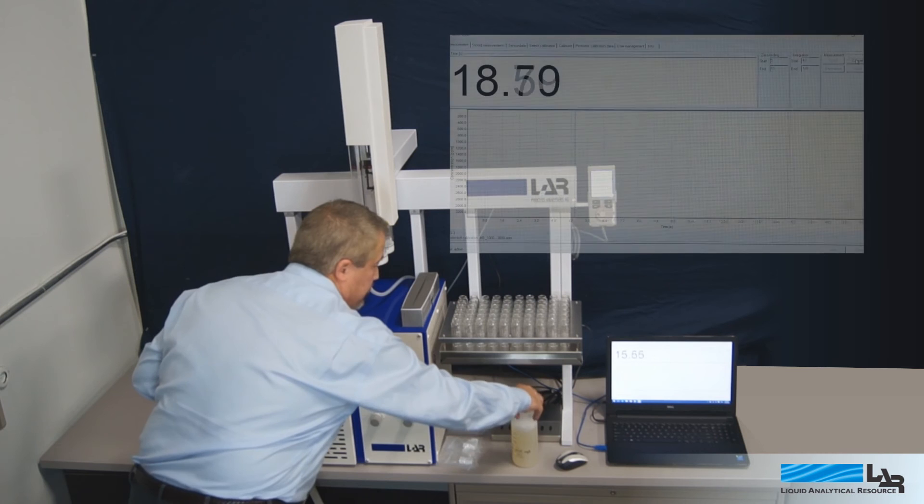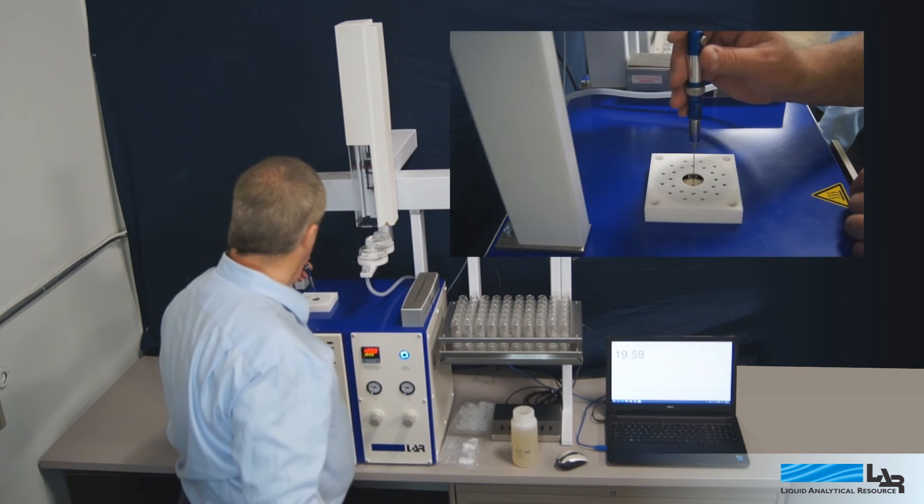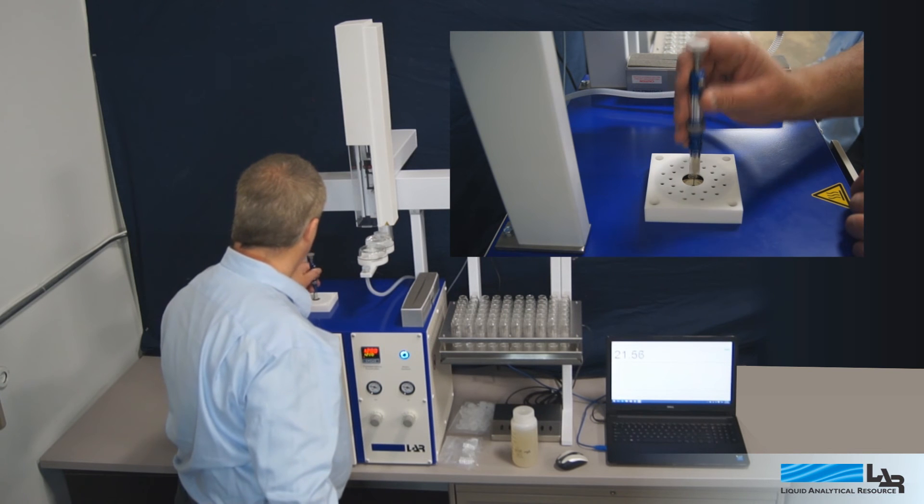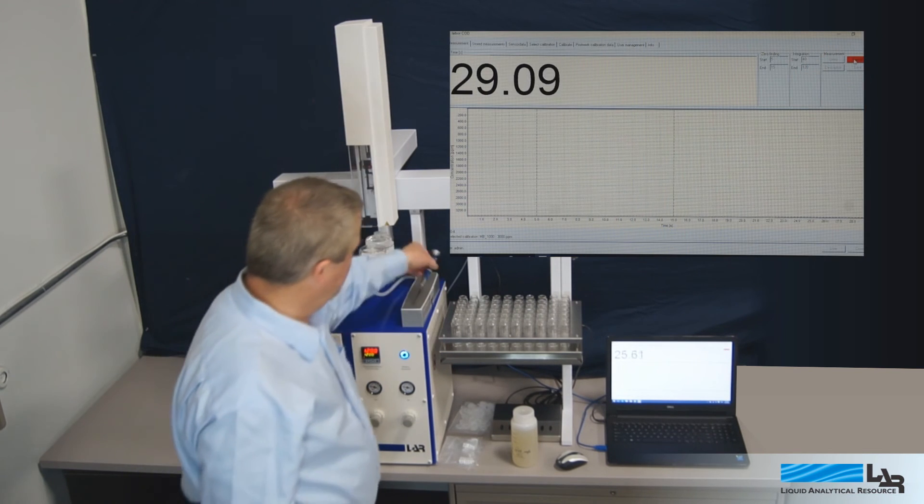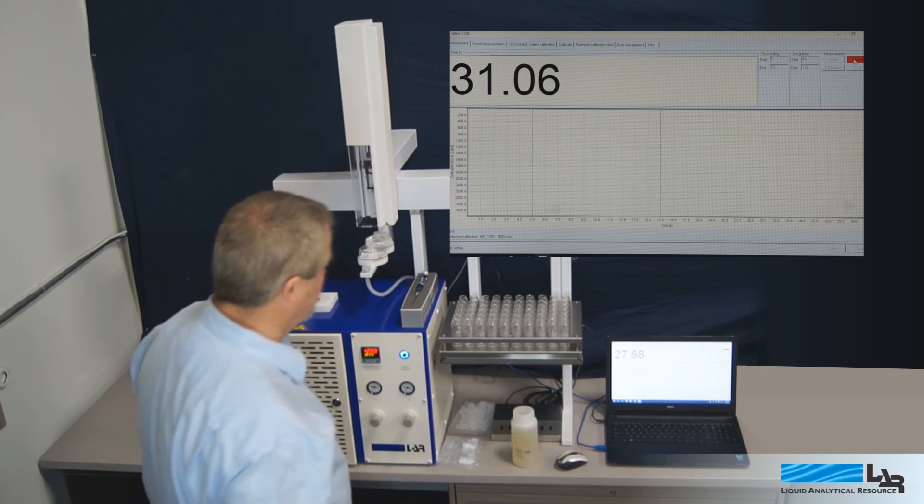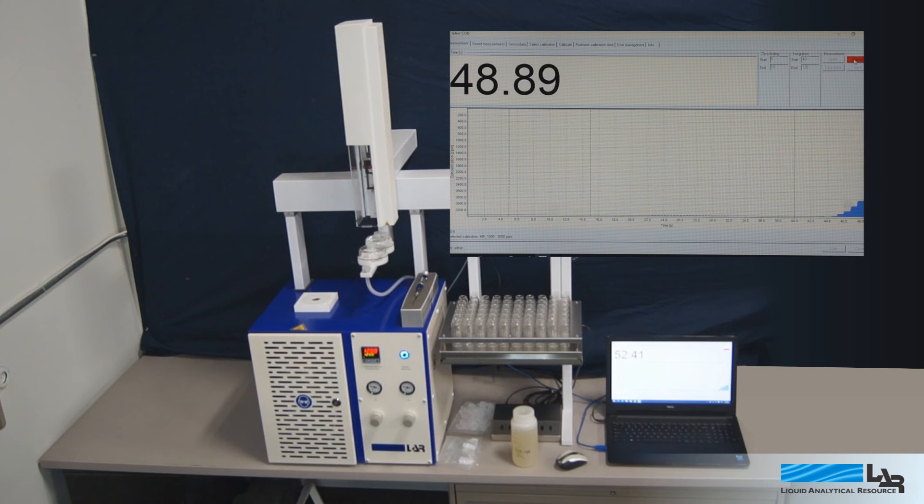In manual operation, the operator starts a measurement cycle and the software alerts the operator when it's time to inject the sample. After 40 to 60 seconds, the resulting curve begins to appear on the screen. The analyzer continues the measurement for 180 seconds or until the operator stops the cycle. The final result is displayed and can be exported as a CSV file for archiving and analysis.